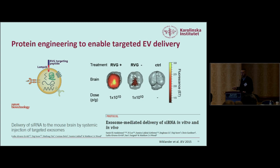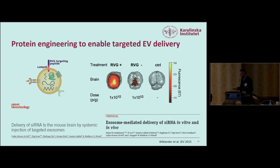When I joined Matthew Wood's lab in 2011, he had published a paper showing that siRNAs could be systemically delivered to the brain by putting targeting peptides on the surface of EVs. We are working on engineering the surface with different targeting constructs — either antibodies or peptides — and can increase CNS delivery, although there is still space for optimization.